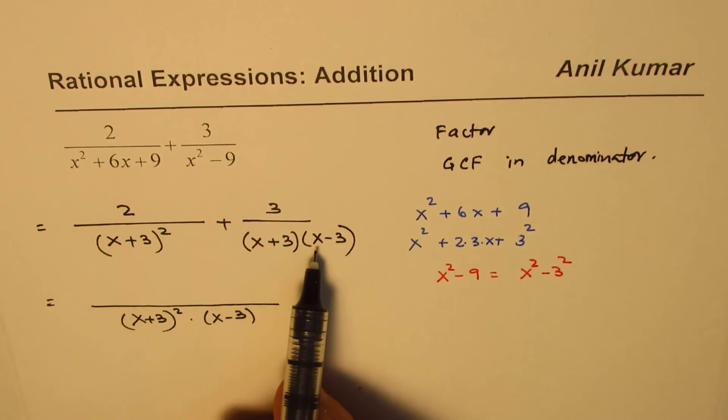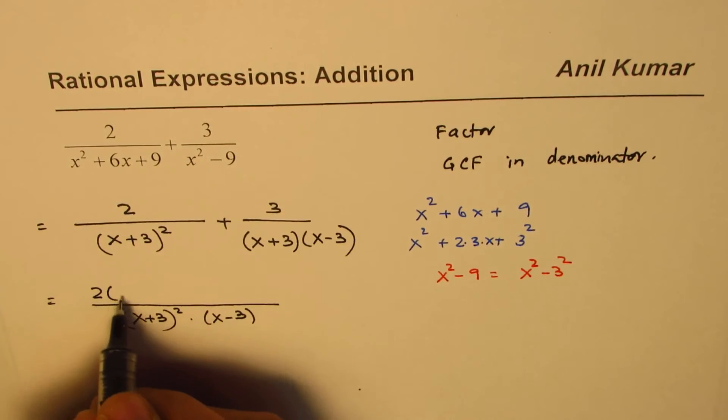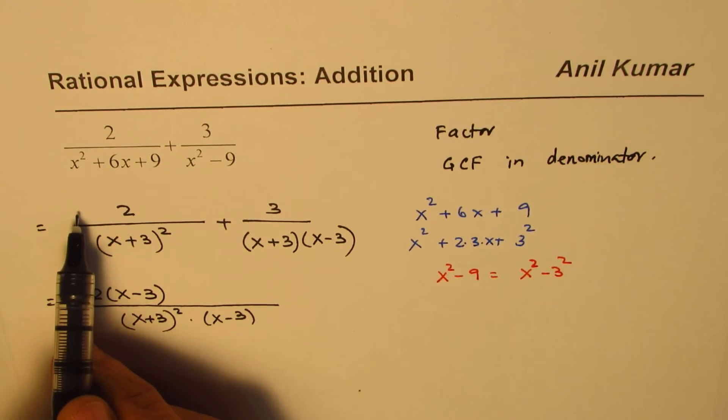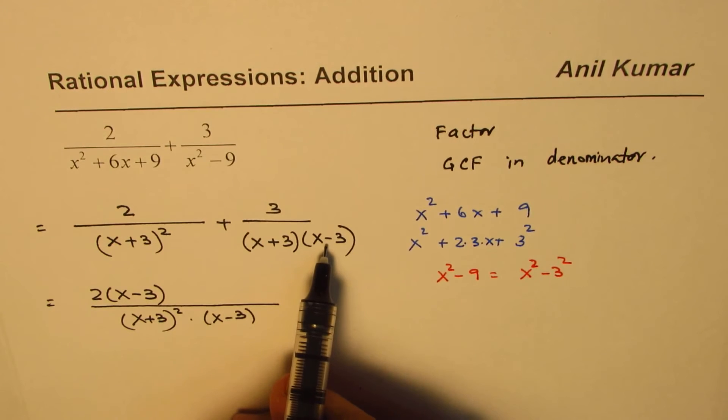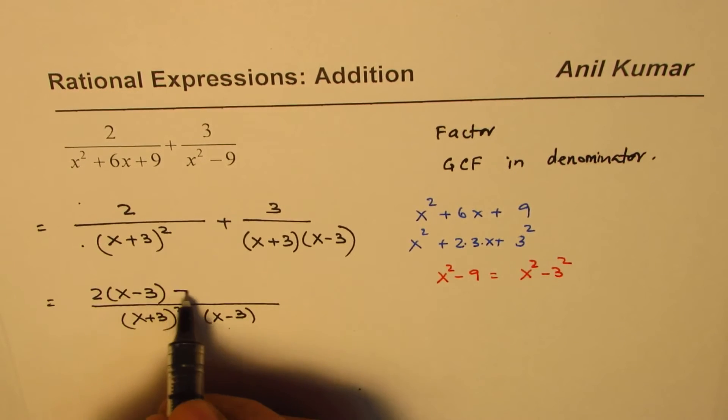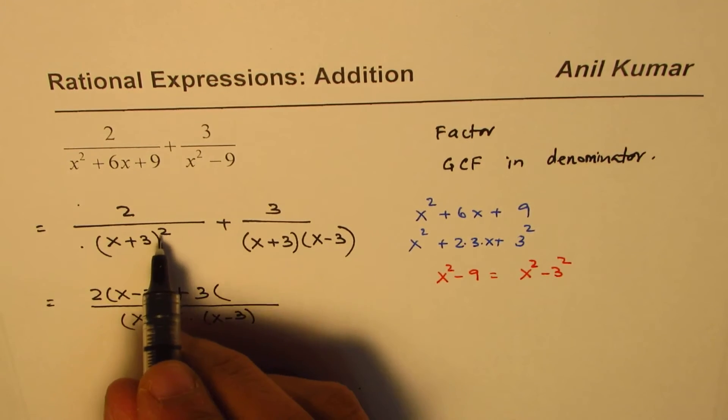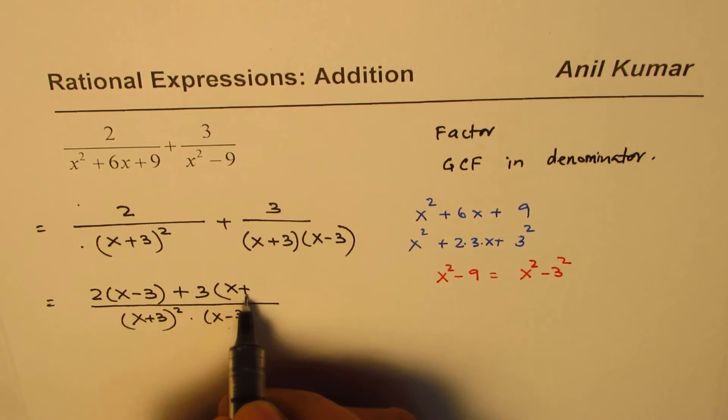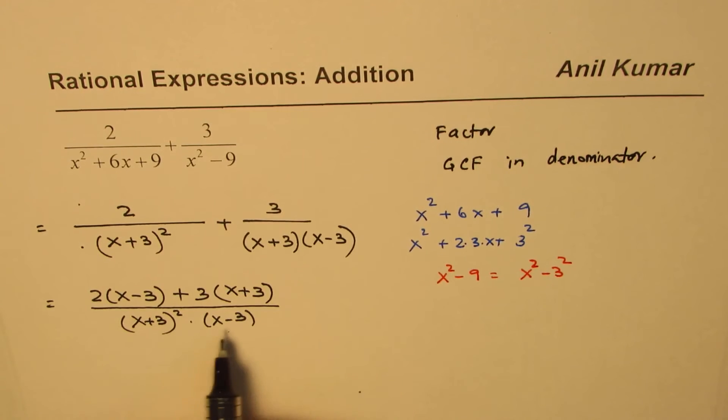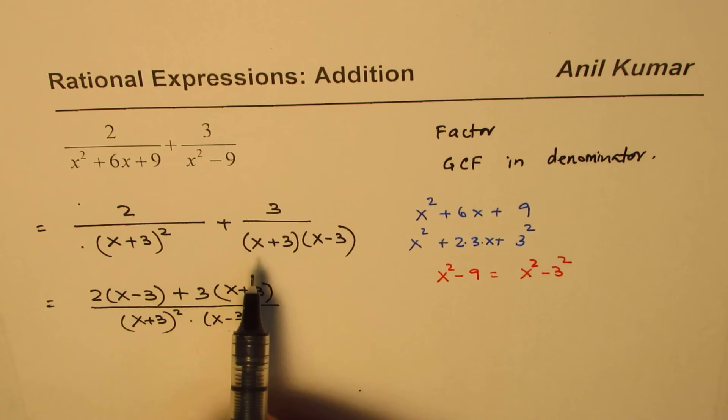In the first one, we are lacking x minus 3. So, we will multiply 2 by x minus 3. So, we get 2 times x minus 3. This is as good as saying multiply the first term and divide the first term by x minus 3. We get x minus 3 in the denominator and also in the numerator plus 3 times. Here, we have one term x plus 3 but not the square one. So, we will multiply by x plus 3. That is how we write down with common denominator which is the greatest common factor of the two.